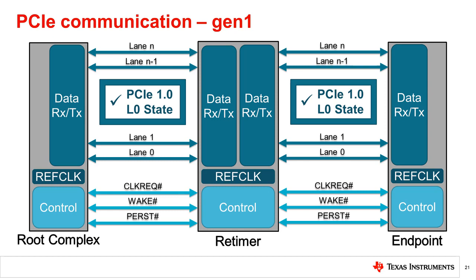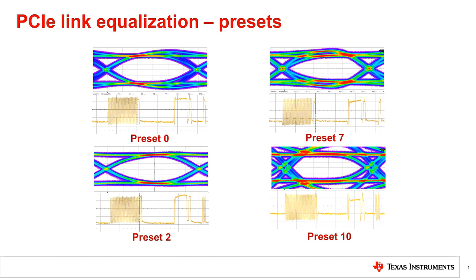If all the devices in the PCIe link support PCIe Gen 2 or higher data rates, then the link speed may also be increased up to the highest data rate supported. If the new data rate is to be PCIe Gen 3 or higher, the PCIe link will need to go through an additional link optimization process called link equalization. In link equalization, or link EQ, the goal is to modify the characteristics of the transmitted data waveform for each port in a way that results in the most stable PCIe link. The PCIe specification defines the ways in which the signal can be modified by providing preset transmitter configurations.